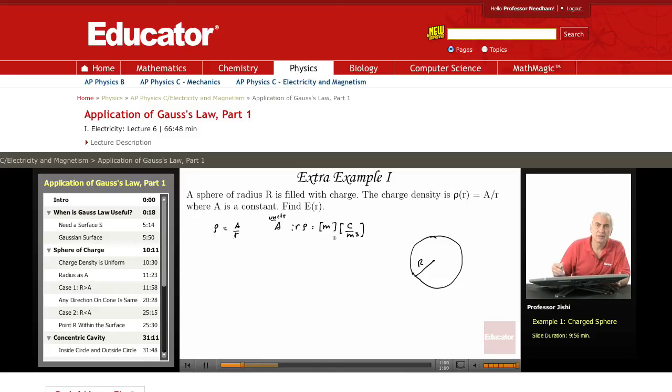R is in meters because this is a sphere, so it's a volume charge density. So A must be in coulombs per meter squared. The units of A are coulombs per meter squared.